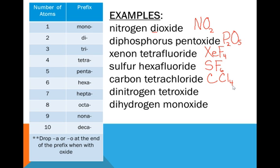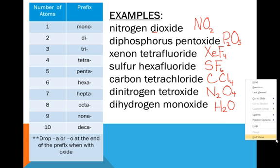Dinitrogen tetroxide. We're going to have nitrogen. Dinitrogen means two nitrogens. Tetroxide means four oxygens. N2O4. And then dihydrogen, H2, monoxide, O, commonly called water. And this is our tutorial for writing and naming chemical formulas for organic compounds.